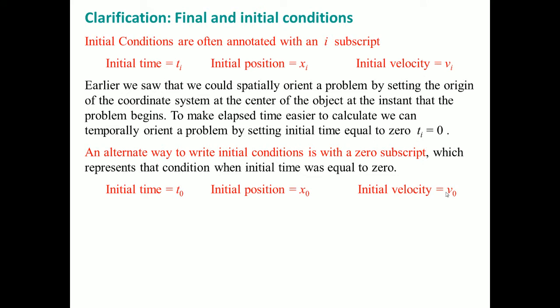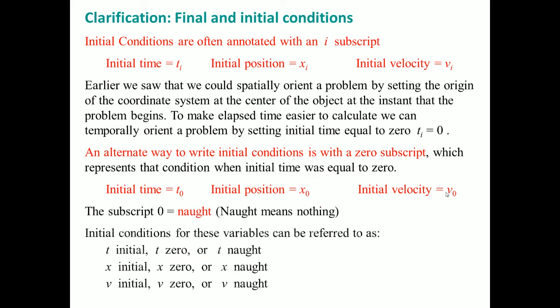The zero subscript is actually referred to as 'naught,' which means nothing — so it's the starting value. You could see it written as T-initial, T₀, or T-naught, which is the same thing as X-initial, X₀, or X-naught, and so on. These two notations are interchangeable. The AP Physics people have no preference for which one you use, so you could pick either one, but understand that they mean the same thing.